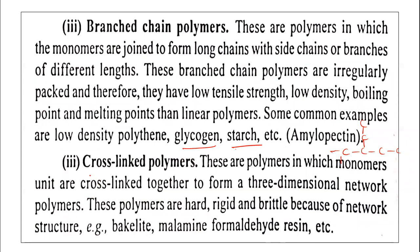Cross-linked polymers are those in which monomer units are cross-linked together to form a three-dimensional network. Because of this network structure, these polymers are particularly hard, rigid, and brittle. Examples of cross-linked polymers are bakelite and melamine-formaldehyde resin.